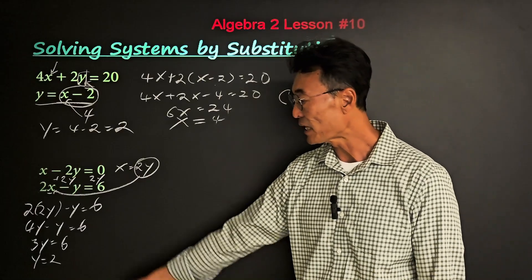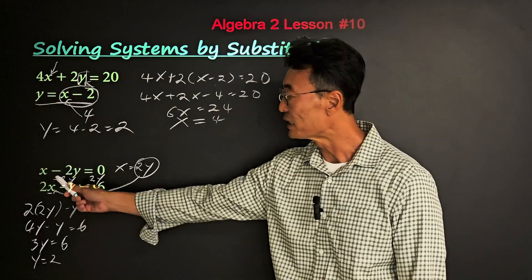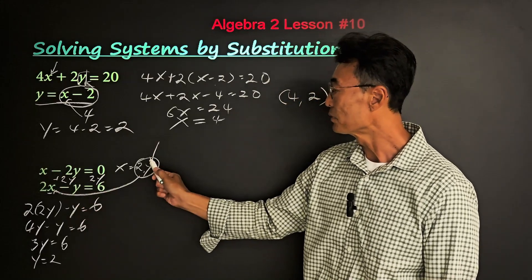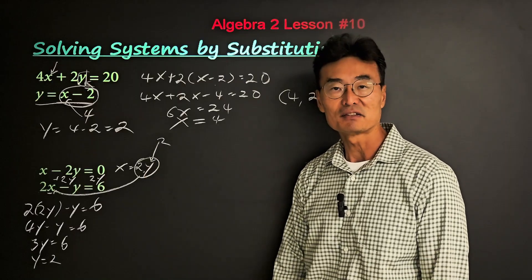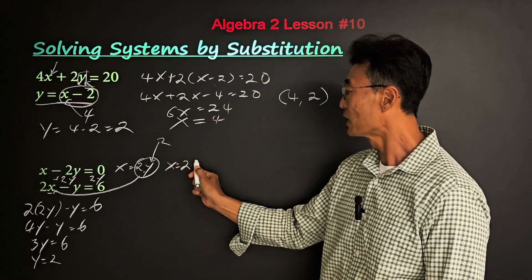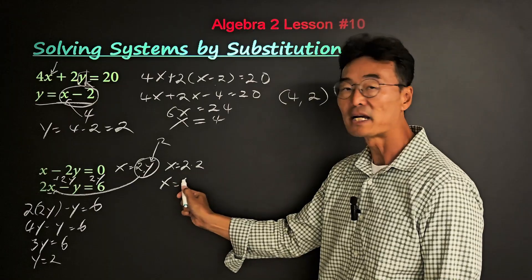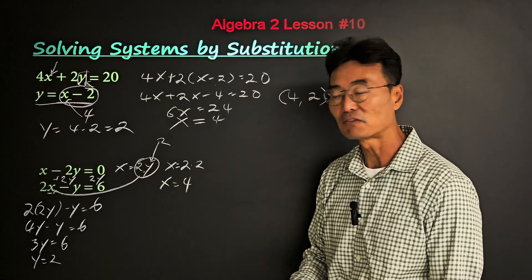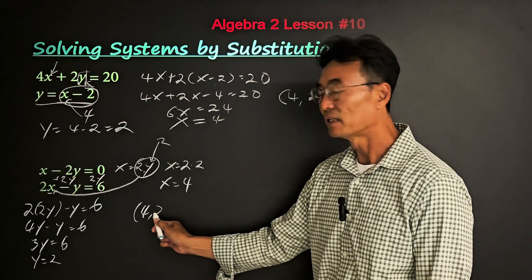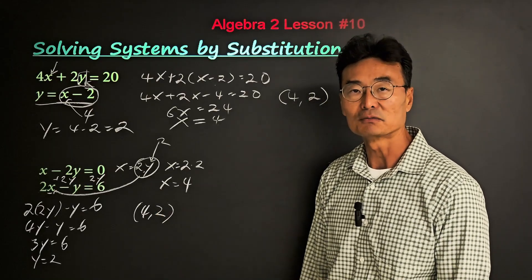Next, to find the value of x, we'll take that 2 and plug it in either here, here, or here. Looks like plugging in the 2 here would eliminate some work. So we end up getting x equals 2 times 2, or x equals 4. So our final answer is x equals 4 and y equals 2.